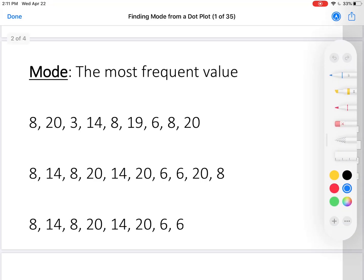Let's take a look at this first list. We have 8, 20, 3, 14, 8, 19, 6, 8, and 20. The mode will be 8 because 8 occurs 3 times and nothing else occurs more than once. Therefore, 8 is the most frequent value. That's the mode.